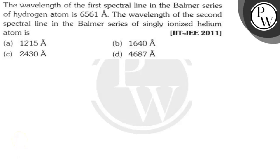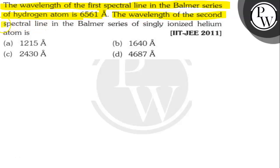Hello, let's read the question. The question says the wavelength of the first spectral line in the Balmer series of hydrogen atom is 6561 Angstrom. The wavelength of the second spectral line in the Balmer series of singly ionized helium atom is how much?